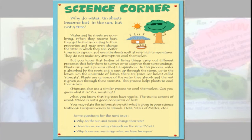Next, this wall magazine is of the Science Corner. One question is there: why do water and tin sheets become hot in the sun but not a tree? The water and tin sheets become hot under the sun, but the tree is not becoming hot — why? They asked this question and gave the explanation along with pictures. And some questions for the next issue are given below: why do the sun and moon change their size? How can we see many channels on the same TV set? Why do we see one image when we have two eyes? You can use these issues for your wall magazines.